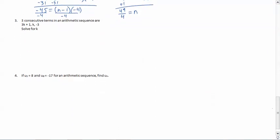Let's try another one. Here's an interesting one. Three consecutive terms in an arithmetic sequence are 3k plus 1, k, and negative 3. Now this one's a little bit tricky because it doesn't tell us that those are the first terms or the last terms or anything else. So for this one, we're actually going to use the idea that the difference has to be constant. Now remember, to find the common difference, we have to do one term minus the term in front of it.